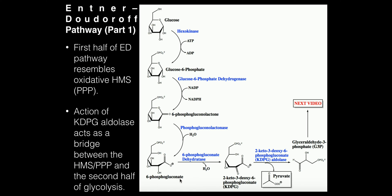6-phosphogluconate is going to be dehydrated by 6-phosphogluconate dehydratase. This enzyme takes the hydroxyl group at the 2-position and converts it into a carbonyl, and also at the 3-position this hydroxyl group is effectively removed. The product is 2-keto-3-deoxy-6-phosphogluconate, which we abbreviate as KDPG — a lot easier than saying the full name.